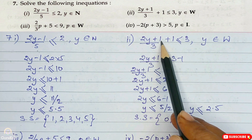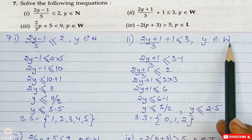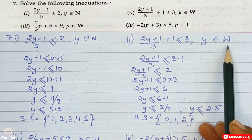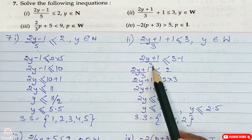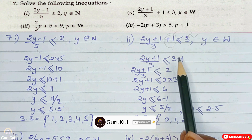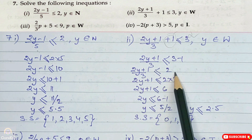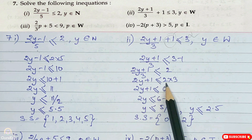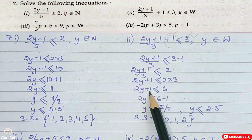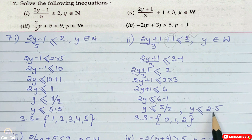Now the second part. It is 2y plus 1 by 3 plus 1 less than or equal to 3, where y belongs to whole number — that means starting from 0. So 2y plus 1 by 3 less than or equal to 3 minus 1. The plus 1 moved to the right hand side. Now 2y plus 1 by 3 less than or equal to 2. So 2y plus 1 less than or equal to 2 into 3. So 2y plus 1 less than or equal to 6. So 2y less than or equal to 6 minus 1. So y less than or equal to 5 by 2, meaning y is less than or equal to 2.5.